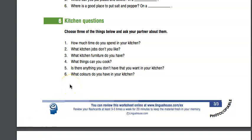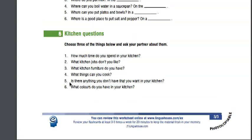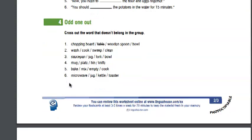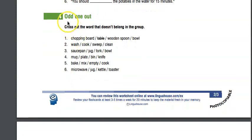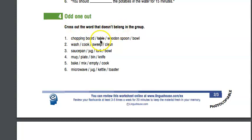Hello again, it's Angela here. This is part two of our kitchen worksheets. I just wanted to go over some more things from the kitchen. We have here 'odd one out' - that means one of these things doesn't fit with the category or the group. It doesn't belong, it doesn't fit. We're going to cross out just one word that doesn't fit.